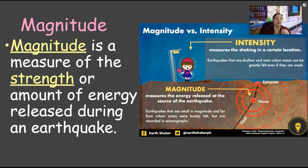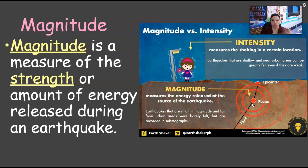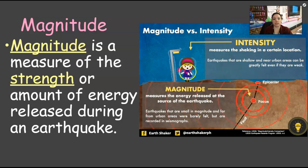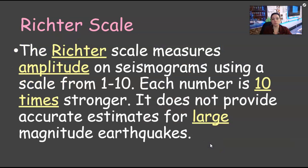Magnitude is the measure of the strength — the energy that is actually released at the focus of the earthquake, down beneath. That's where the energy is released, where that pop happens, that wave going out. The intensity, however, is felt on the surface at the epicenter, above the focus. This diagram is really great — it shows the intensity, what you see and what you feel, whereas the magnitude is the strength, the energy released.